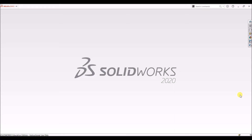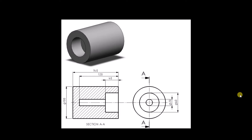Hello guys, welcome to SolidWorks tutorials. In this video we will see how to design this part using SolidWorks software. Before starting the sketch, let us have a clear look at the drawing first. It is a cylinder and the dimensions of the cylinder are as follows: the diameter of the cylinder is 100 mm and the height of the cylinder is 140 mm.